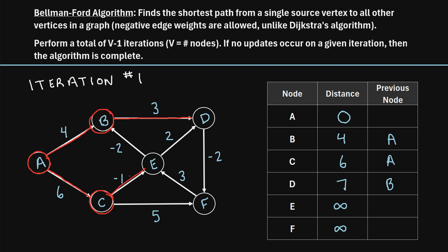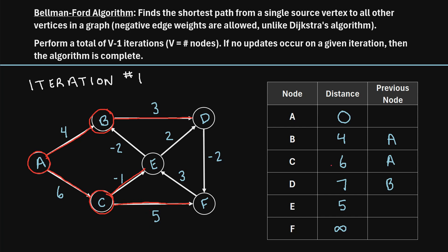Moving on to node C. If we go from C to node E, that's a distance of negative one. C currently has a distance of six, so six minus one is five. Five is smaller than infinity, so we update E to five. Now if we travel from node C to node F, that's a distance of five. C has a distance of six, so six plus five is eleven. Eleven is smaller than infinity, so we update F to eleven.